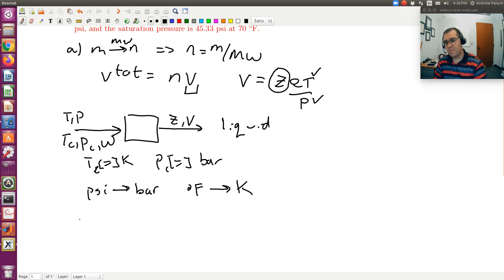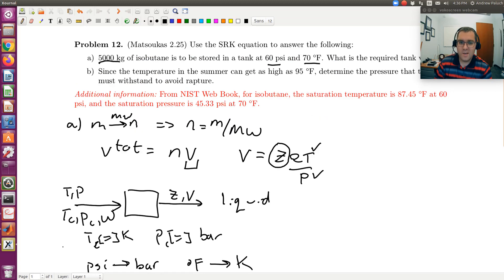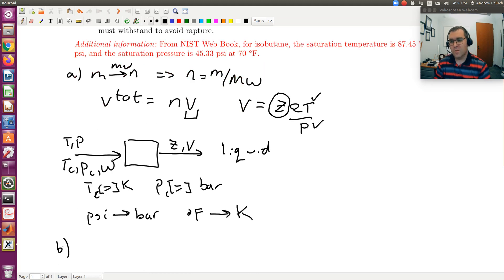Then B. B, we could tackle a couple different ways. But looking at B, since the temperature in the summer can get as high as 95 degrees Fahrenheit, determine the pressure that the tank must withstand to avoid rupture. So this is the same tank as A.